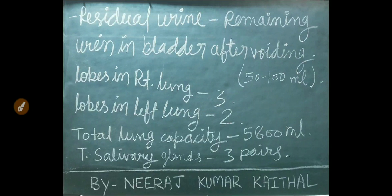Residual urine is the remaining urine in bladder after voiding, normally 50 to 100 ml. Lobes in right lung: 3. Lobes in left lung: 2. Total lung capacity is approximately 5,800 ml.